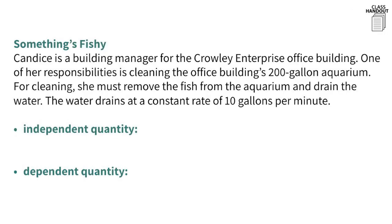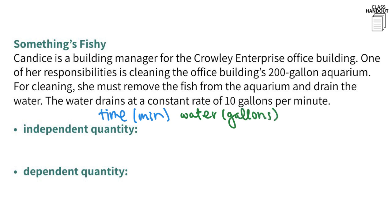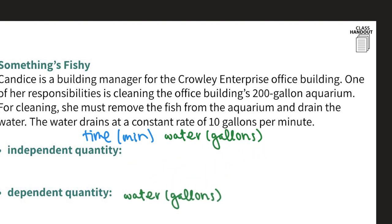Candace is a building manager who must clean a 200-gallon aquarium. She removes the fish and drains the water at a constant rate of 10 gallons per minute. The two quantities are time, measured in minutes, and water, measured in gallons. The amount of water depends on the amount of time elapsed, so the amount of water is the dependent quantity and time is the independent quantity.